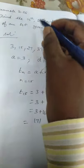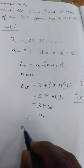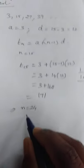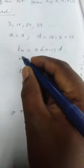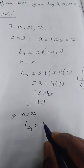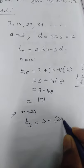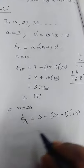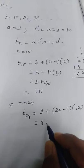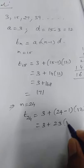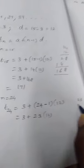The next one is 24th term. 24th term that means n is equal to 24. T24 is equal to A is 3 plus n value is 24 minus 1 into D is 12 is equal to 3 plus 24 minus 1, 23 into 12.